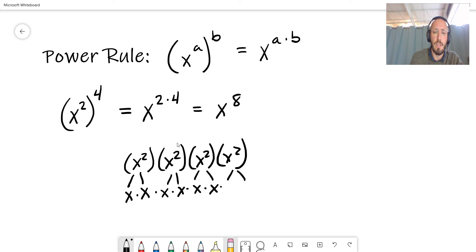And once we're done expanding them, we can count up all of these x's, and we can see that there are 8 of them. So this whole expression simplifies to x to the 8th. And that is the power rule.